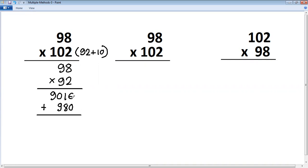We have to just add this now. 6 plus 0 is 6, 1 plus 8 is 9, 0 plus 9 is 9, and this 9. So the answer is 9996.